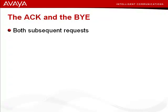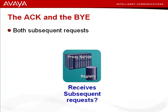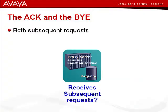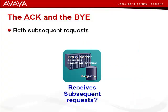Why is this? Are we saying that the server didn't get any subsequent requests? Think back — what is the purpose of this server? What service has it provided for us? We use the server to perform a location service, to help us make a call using a public address rather than an IP address.